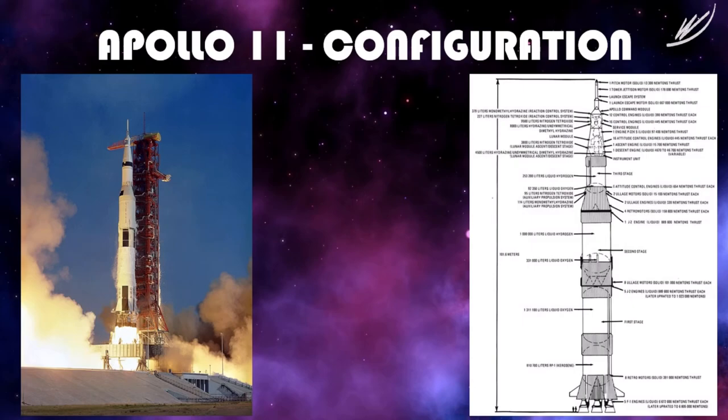Let's look at the basic configuration of the Apollo 11 system. The main configuration consists of the rocket and the spacecraft. If you see here on the left, this was the exact rocket and spacecraft that was sent to the moon. The bottom part is the rocket and on the top part sits the spacecraft.